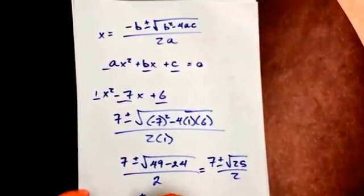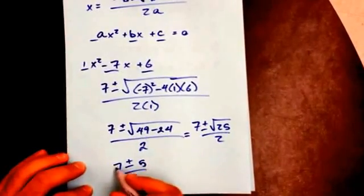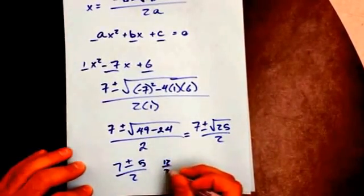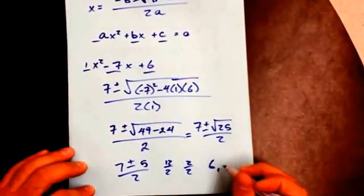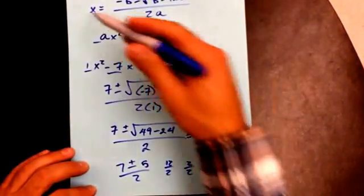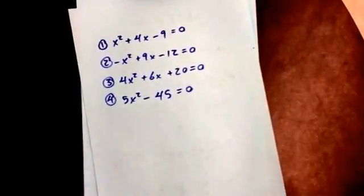Now I'm going to do the square root. Square root of 25 is 5. So 7 plus 5 is 12 over 2. 7 minus 5 is 2 over 2, which gives me 6 and 1. Those are my two solutions to this equation right here. Okay, so I'm going to go on. I'm going to do another one.